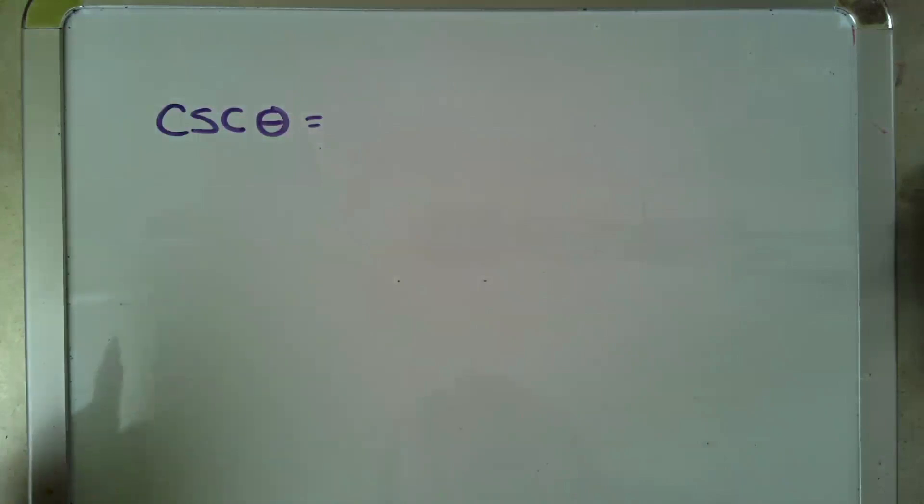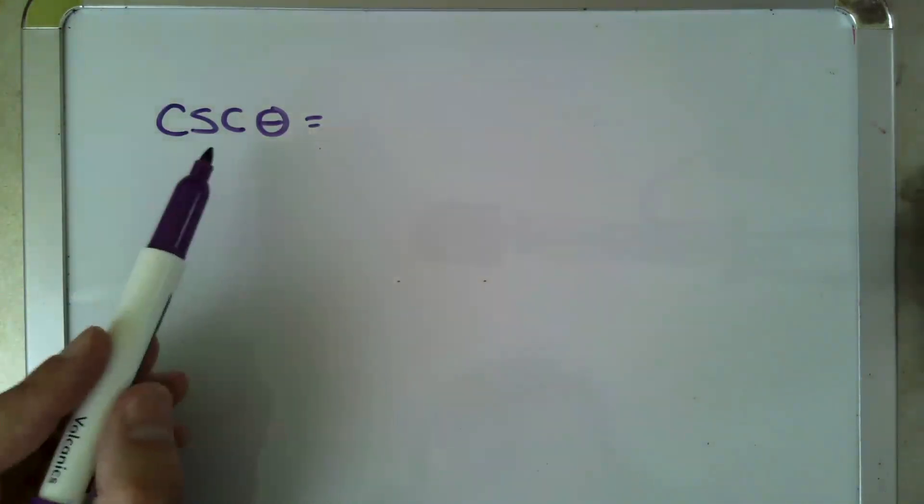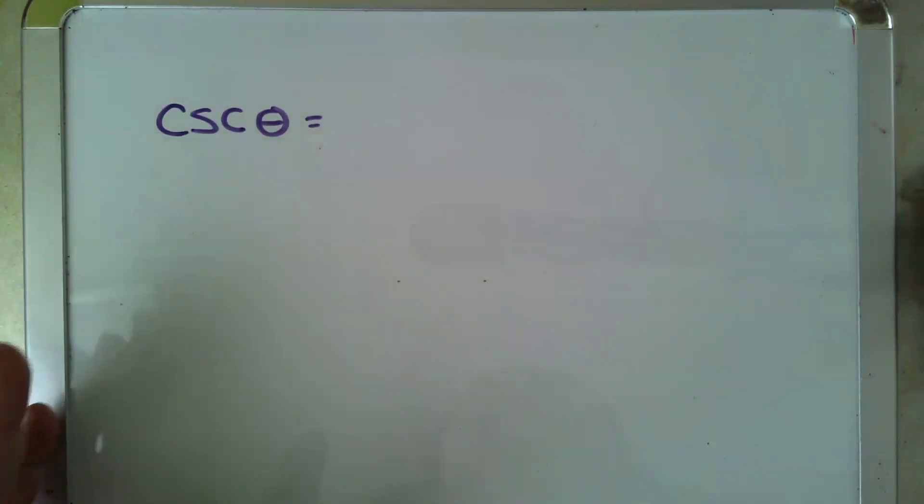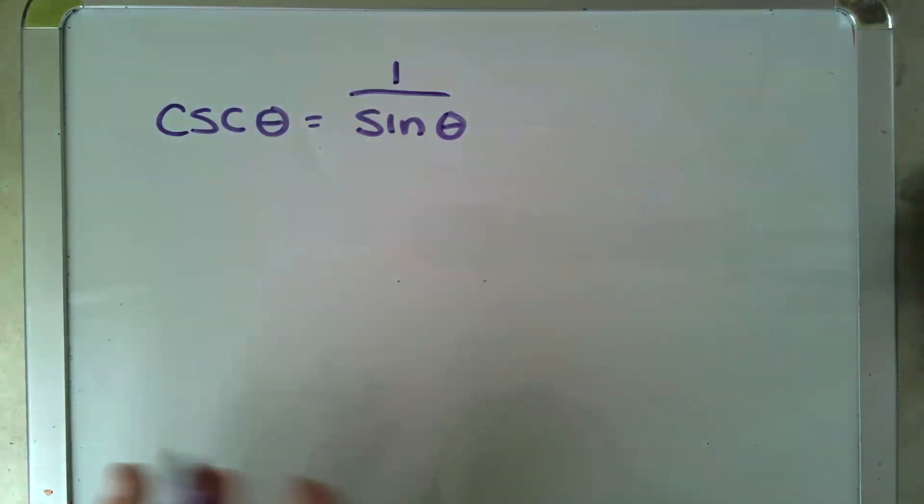Okay, so it all has to do with the definition of cosecant, secant, and tangent. Cosecant theta is defined as 1 over sine theta.